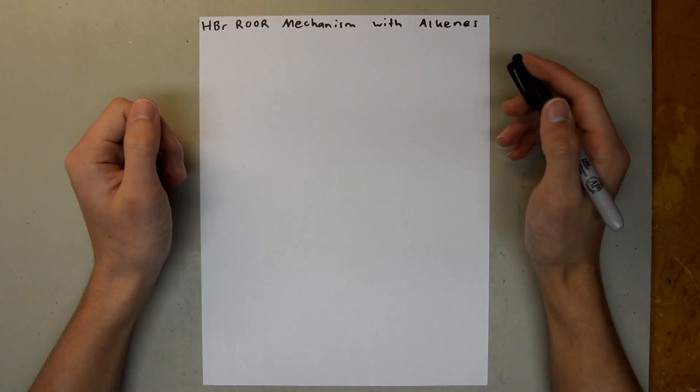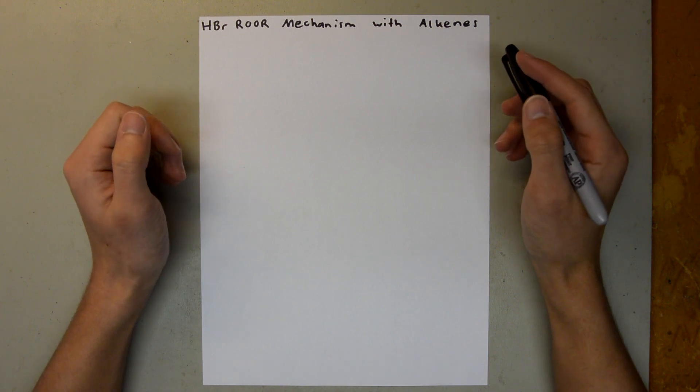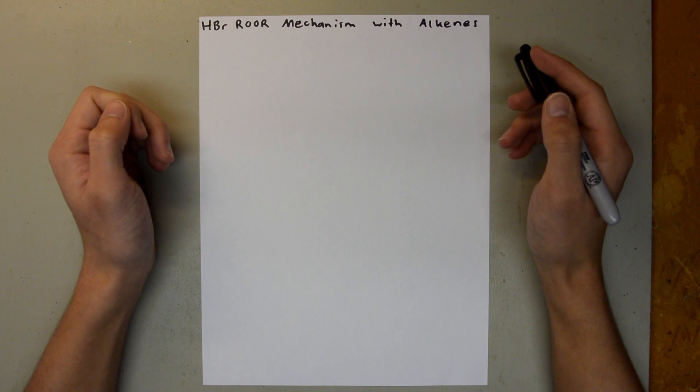What is going on YouTube? Just helping you out here. And for today's video, I'll be doing the HBr and ROR mechanism with alkenes, or hydrobromic acid and peroxide.